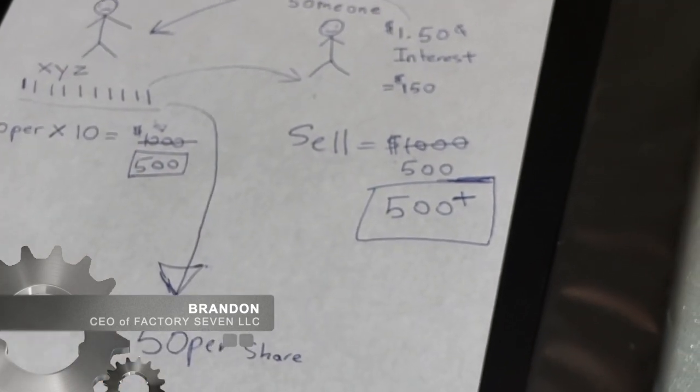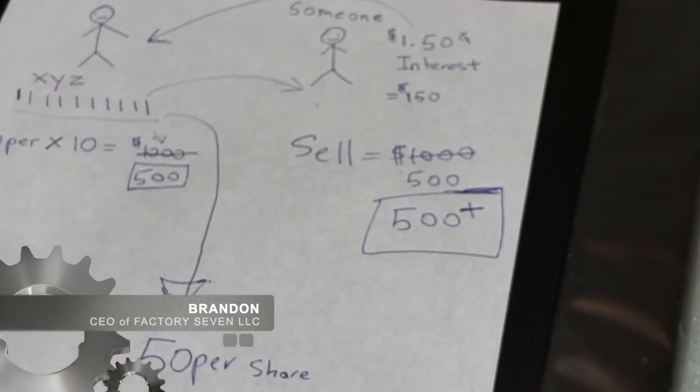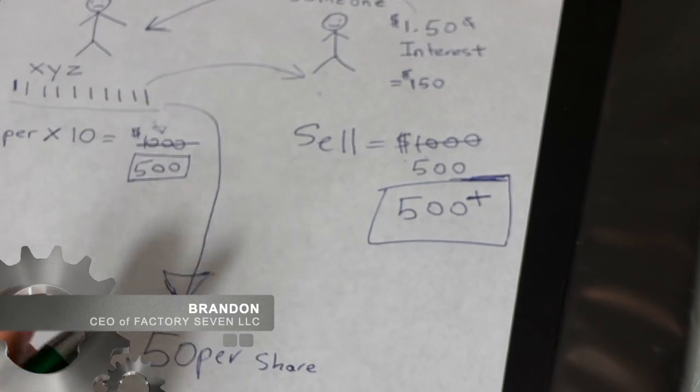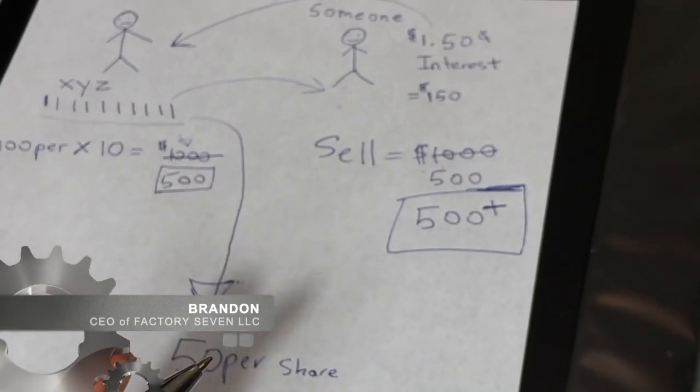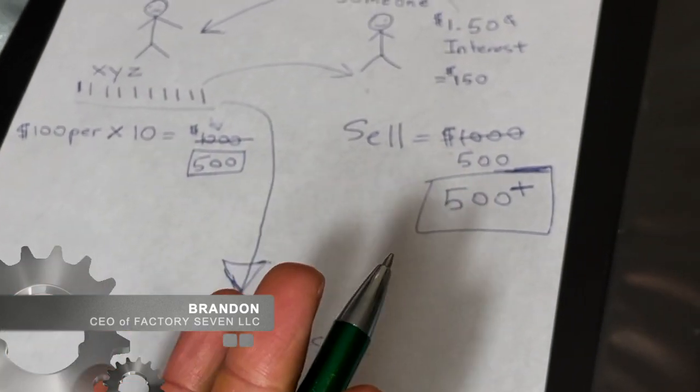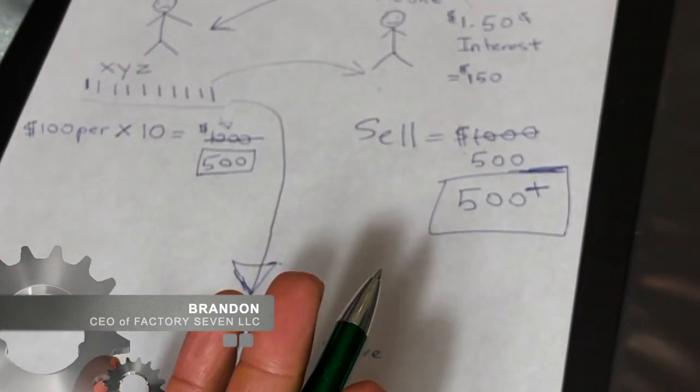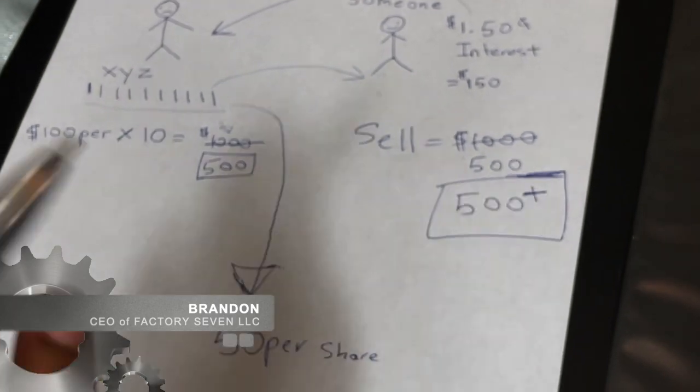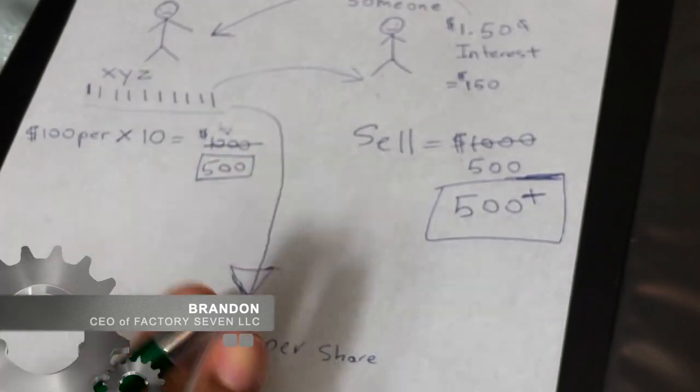So that's basically how short selling works. Every situation is different. The interest rates are different based on the security. And this is exactly what kind of happened with the AMCs and the GameStop. So just in a nutshell, this is what short selling is.